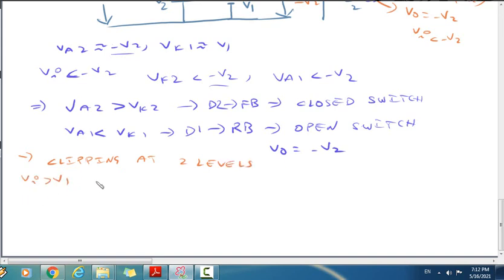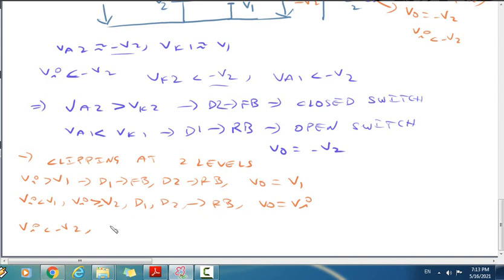To summarize: when input is greater than V1, diode D1 is forward biased, diode D2 is reverse biased, V0 equals V1. When input is between V1 and minus V2, both diodes are reverse biased, so output equals input. When input is less than minus V2, D1 is reverse biased, D2 is forward biased, V0 equals minus V2.